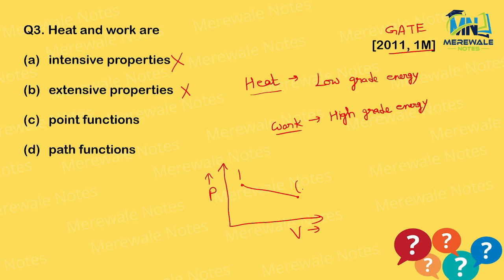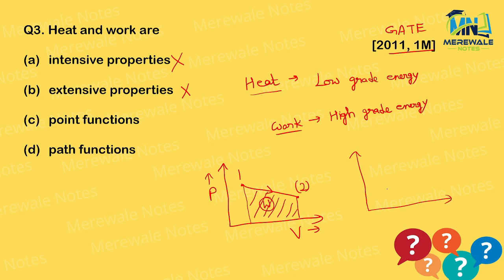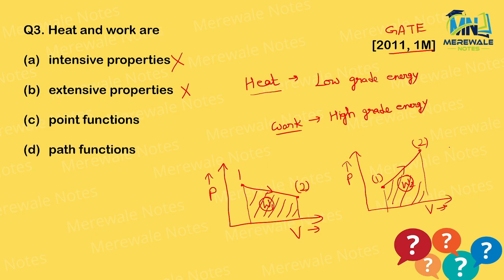For a process going from state 1 to state 2 on a pressure-volume diagram, work done equals the projected area on the volume axis. If you change the path — keeping initial point 1 and final point 2 the same but taking a different route — the area changes, so W1 ≠ W2. Both heat and work depend on the path taken.